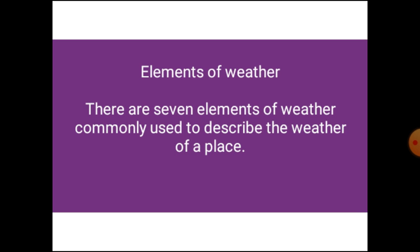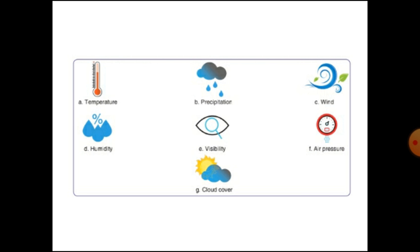Elements of weather: there are seven elements of weather commonly used to describe the weather of a place. Temperature, precipitation, wind, humidity, visibility, air pressure, and cloud cover. These are the seven elements of weather.